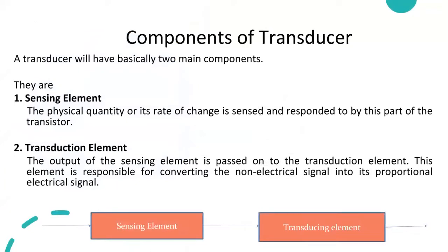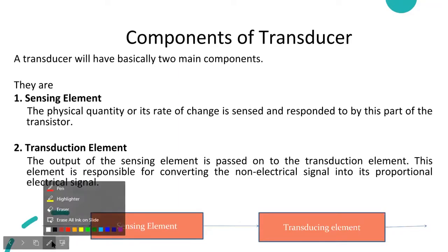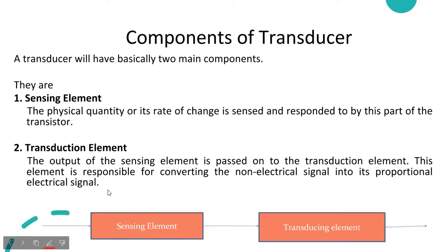Basically, a transducer consists of two main components: the sensing element and the transduction element. The sensing element senses the physical quantity or its rate of change. The transduction element converts the non-electrical signal into its proportional electrical signal. In most cases, the physical quantity we are supposed to measure is a non-electrical signal, which has to be converted into an electrical signal — and this is performed by the transduction element.